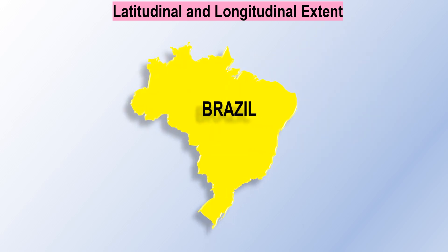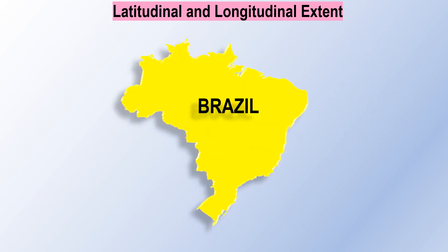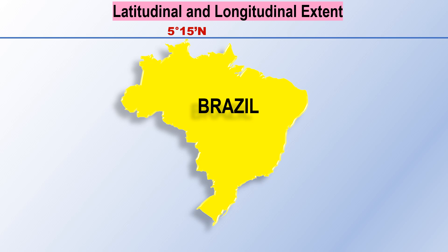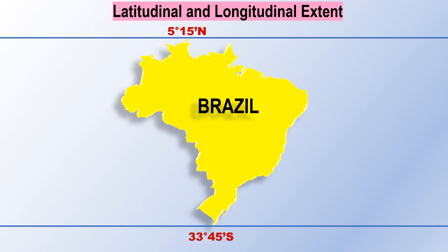Now we will study the latitudinal and longitudinal extent of Brazil. This is mainland Brazil. The latitudinal extent of mainland Brazil is from 5 degrees 15 minutes north to 33 degrees 45 minutes south.